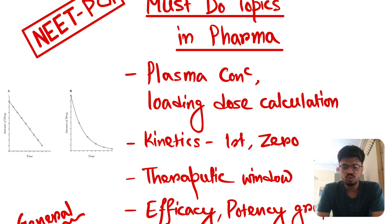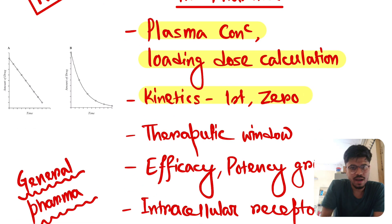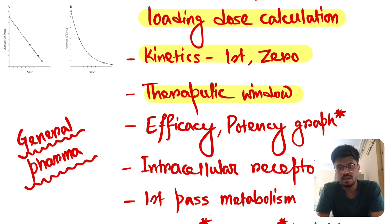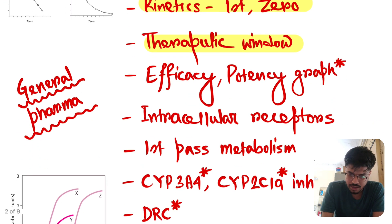In general pharma, you have to go through some basic topics. These are plasma concentration, loading dose calculation. In NEET PG, loading dose calculation is unlikely, but in INI, loading dose calculation is very high yielding topic. Kinetics, first order, zero order, very very important. Therapeutic window and therapeutic index, very very extremely important. Efficacy and potency graph. Every year this topic is repeated.